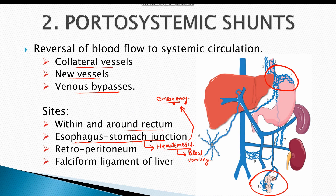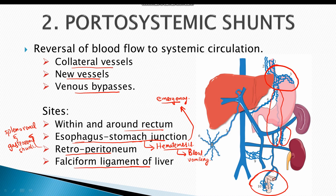Bypasses also form in the retroperitoneum, including splenorenal and gastrorenal shunts. Additionally, a shunt forms between the umbilical vein and abdominal wall veins. Dilation of subcutaneous veins in the abdominal wall creates a pattern known as caput medusae, also referred to as spider angioma.